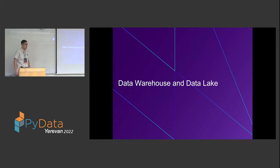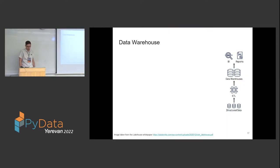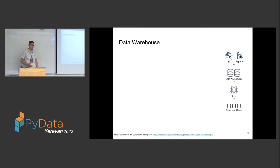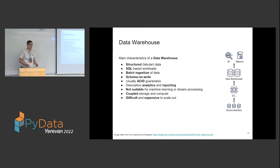Let's jump in. The first topic is data warehouse and data lake. Every company has operational data, operational databases, which store data that can be useful for business decisions. Traditionally, this data would be ingested into one central analytical database where analysts could query the data, create reports and dashboards on top of it. Such a system usually would have a specific set of properties.